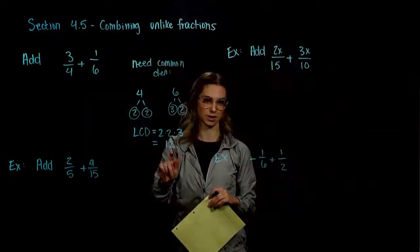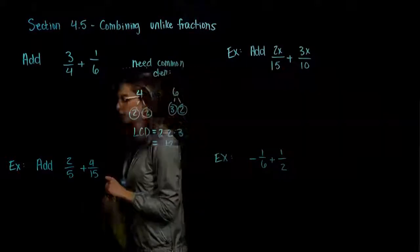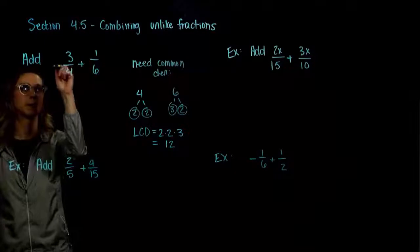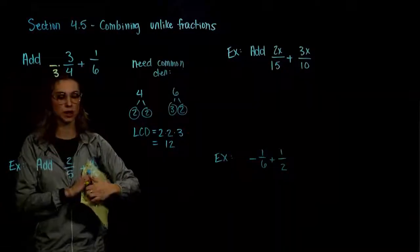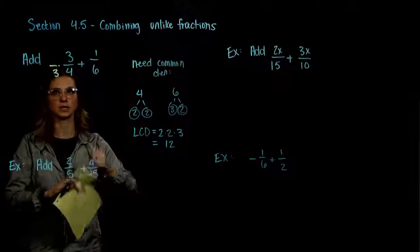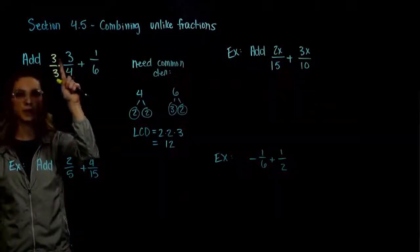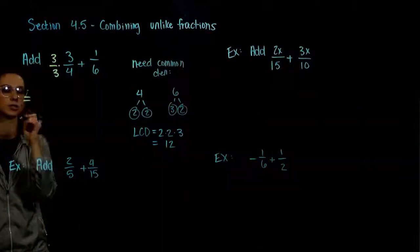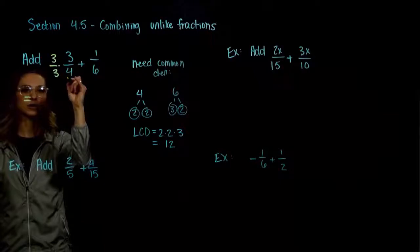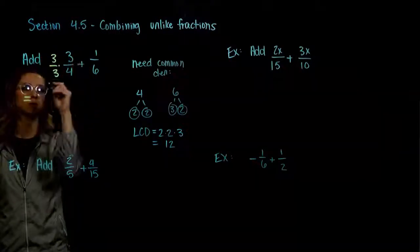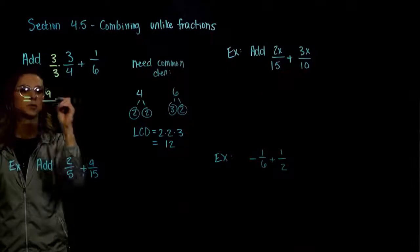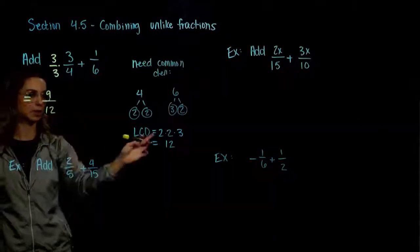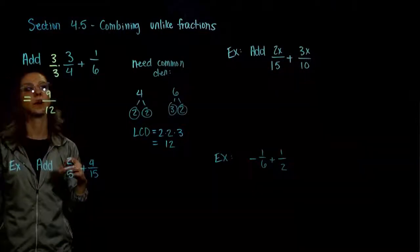Let's build to this common multiple. To turn 4 into 12, what do we have to multiply by? 3. And whatever we do to the bottom, we have to do to the top, because in reality we're just multiplying by 1 — we're just changing what it looks like. So our equivalent fraction: 3 fourths becomes 3 times 3, which is 9, over 3 times 4, which is 12. They're still equivalent, but now we have this denominator.